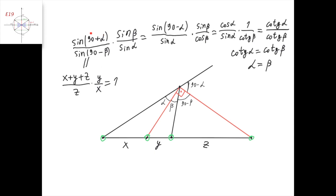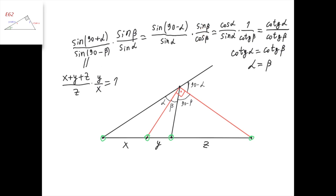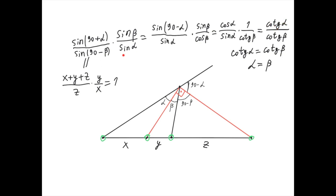Now we know that sine of (90 plus alpha) equals sine of (90 minus alpha), because the sum of (90 plus alpha) and (90 minus alpha) is 180 degrees. We also know that sine of (90 minus beta) equals cosine of beta, because the sum of beta and (90 minus beta) is 90 degrees. Similarly, sine of (90 minus alpha) equals cosine of alpha. And cosine of beta divided by sine of beta is cotangent of beta, so sine of beta over cosine of beta equals 1 over cotangent of beta. Similarly, cosine alpha divided by sine alpha equals cotangent of alpha. So the expression turns into cotangent of alpha divided by cotangent of beta.